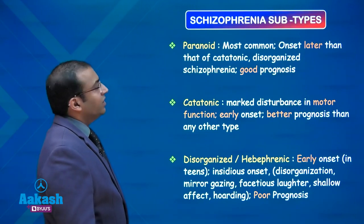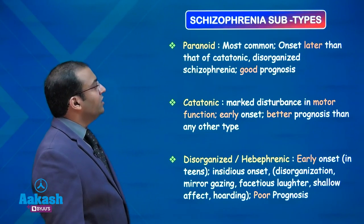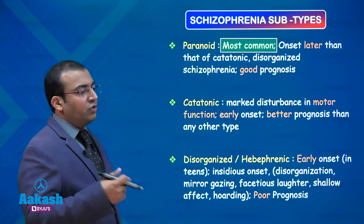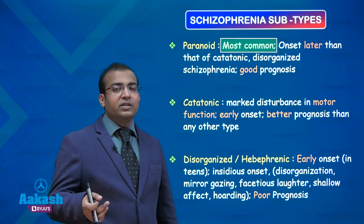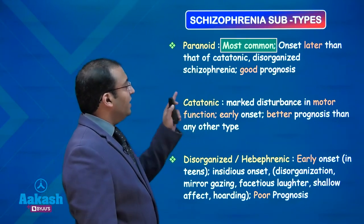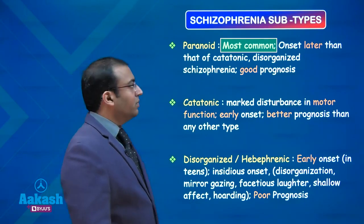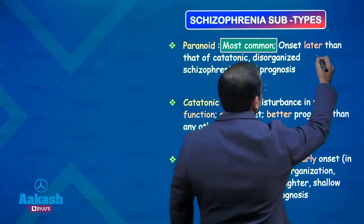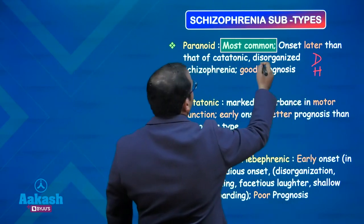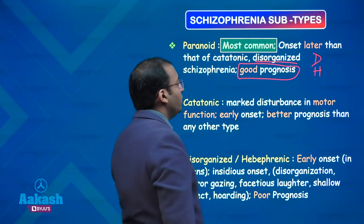There are six subtypes of schizophrenia to know. The first is paranoid schizophrenia, the most common variety and the most commonly asked clinical question in psychiatry on this topic. Patients have a later onset than other subtypes and a good amount of positive symptoms — meaning a lot of delusions, hallucinations, and disorganization. This subtype of schizophrenia has a good prognosis.